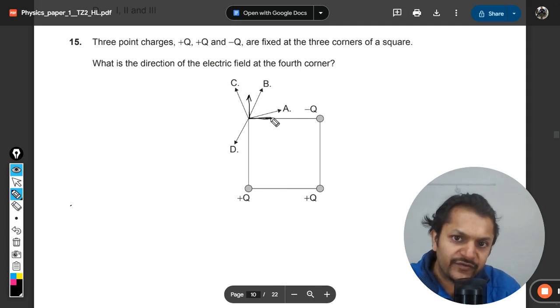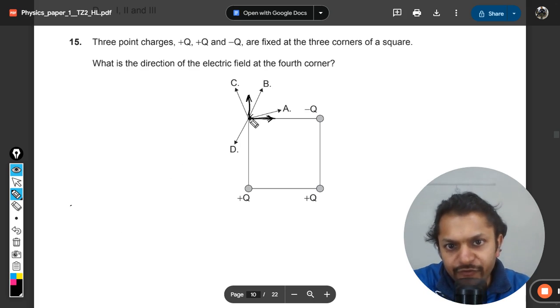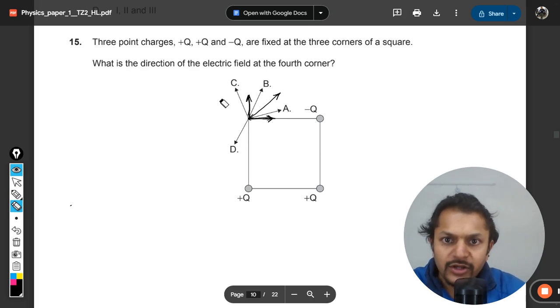And this charge will be producing an equal electric field but towards itself like this. These will be the two values. So our resultant can be created which will be like this, and that will be quite bigger.